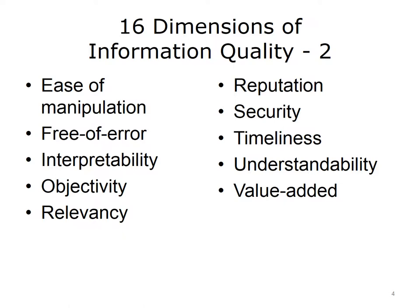Objectivity: the extent to which data is unbiased, unprejudiced, and impartial. In addition to human-introduced bias, information bias can also occur from poorly calibrated equipment, poorly crafted information collection tools such as questionnaires, and a multitude of other sources. Relevancy: the extent to which the data is applicable and helpful for the task at hand. In practice, information is often required to be used that was not designed or collected for that specific purpose, creating a range of relevancy for the information used.